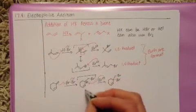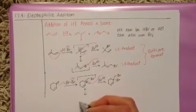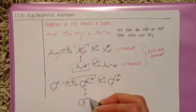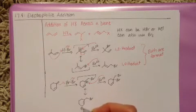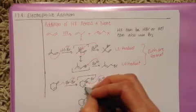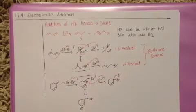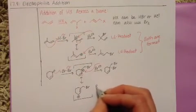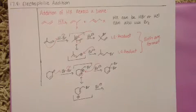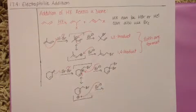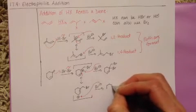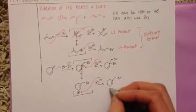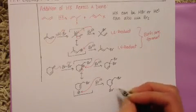The carbocation has a resonant structure that is formed by moving the double bond. And that resonant structure can be attacked by the bromide ion. And this gives us the 1, 4 product.